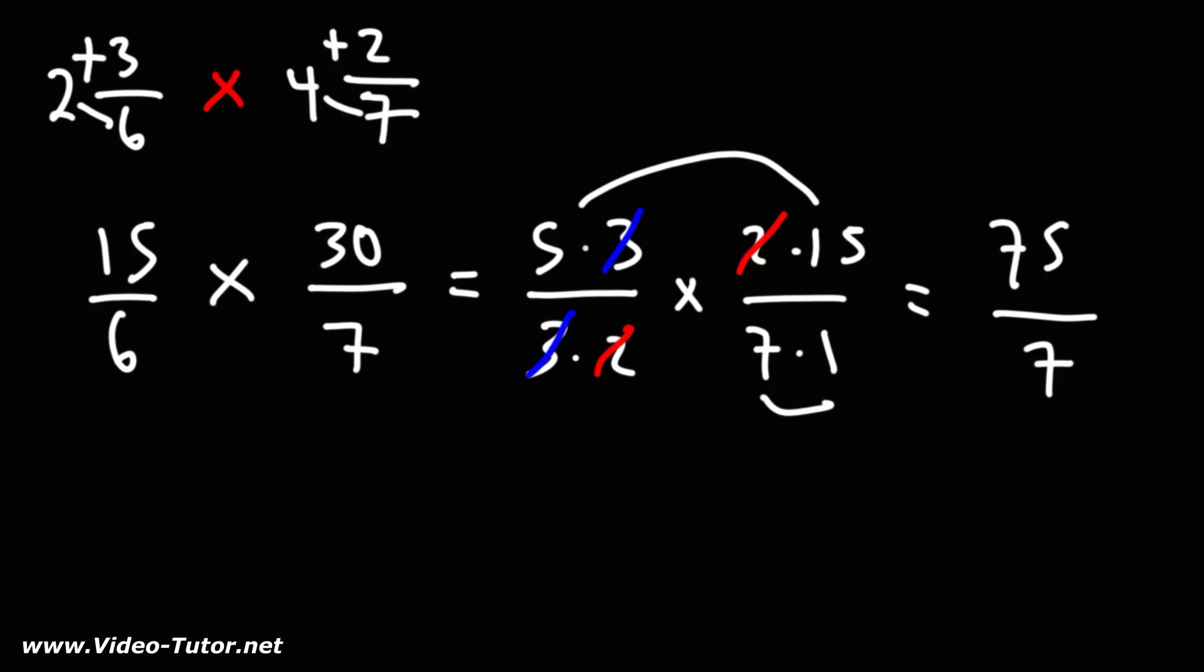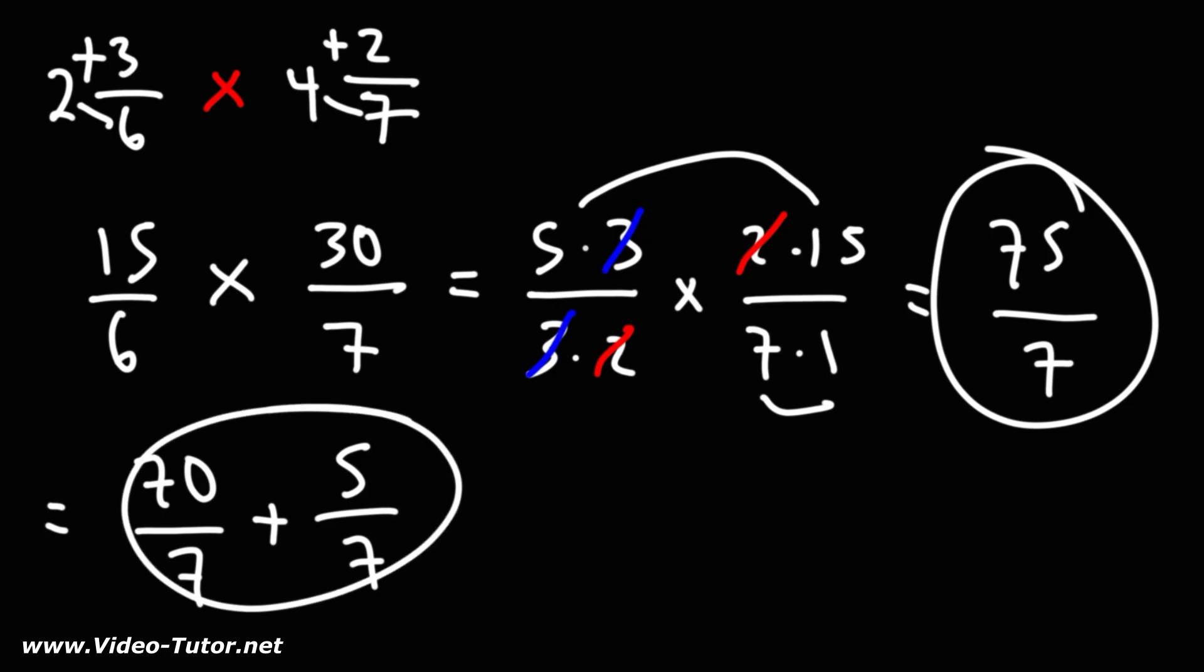Now, this is our answer. But typically, since the problem was written as mixed numbers, you want to convert this improper fraction back to a mixed number. So you could use long division, or you could do it this way. The highest multiple of 7 under 75 is 70. And 75 minus 70 is 5. So we could break apart this fraction into these two smaller fractions.